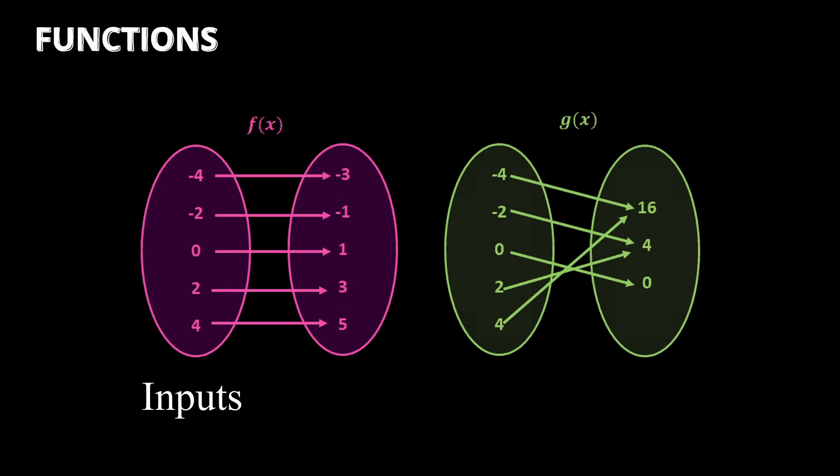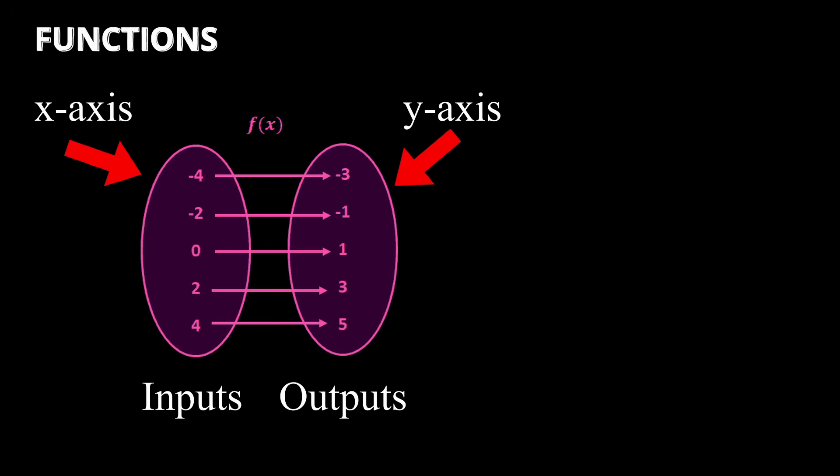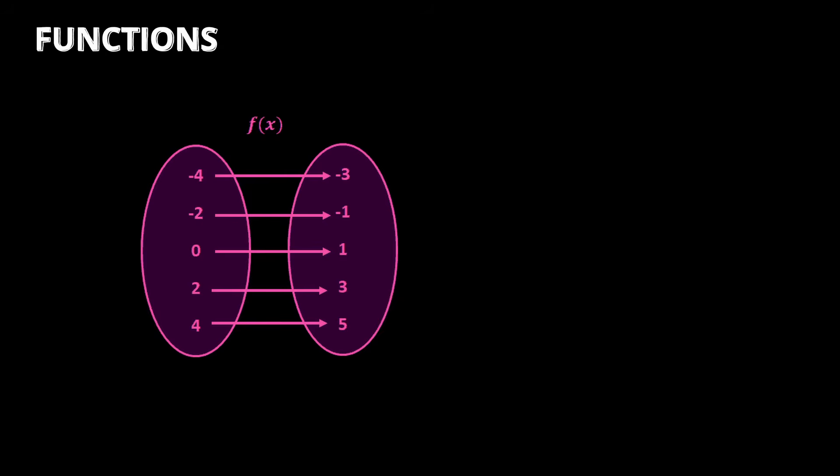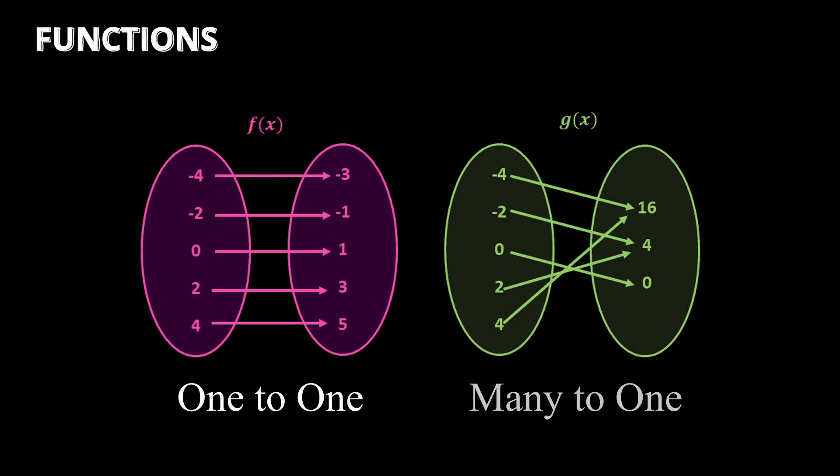Functions relate a set of inputs to a set of outputs. A function that exists in 2D takes in an input in the x-axis and outputs a value in the y-axis. Doing this for many values gives you a graph. A function must specifically have either the one-to-one relationship or many-to-one relationship to be considered a function.